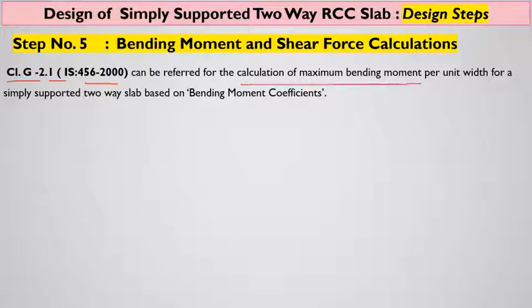The calculation for bending moment per unit width for a simply supported two-way slab is done using the method of bending moment coefficients. These bending moment coefficients are available in IS 456 Clause 2.1.